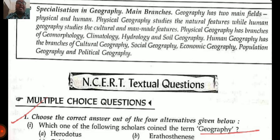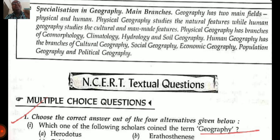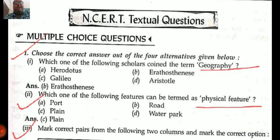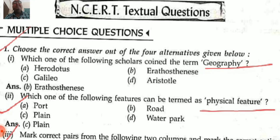Let's discuss the NCERT textual questions. Please take out your book — Fundamentals of Physical Geography — and mark the objective answers. Those who don't have the book can write the question number and option in a separate notebook. First question: which scholar coined the term geography? Options are Herodotus, Eratosthenes, Galileo, and Aristotle. The answer is Eratosthenes, who is also known as the father of geography.